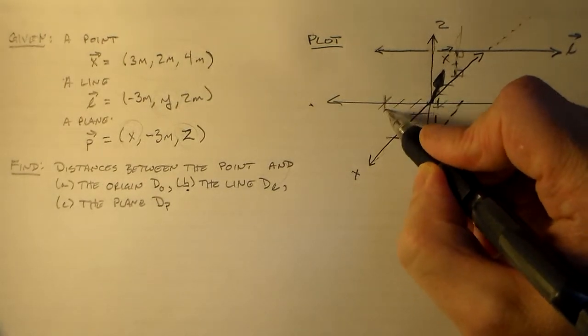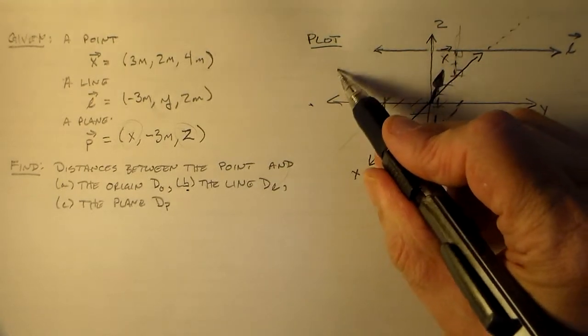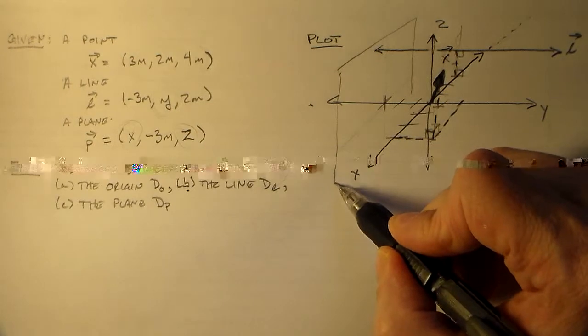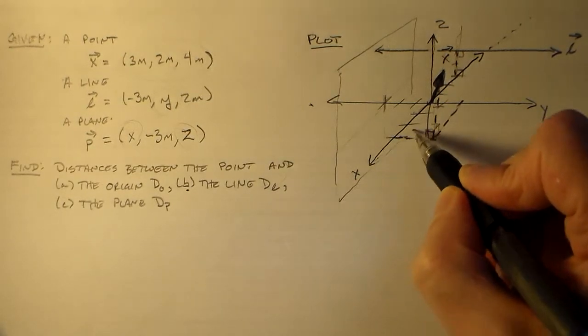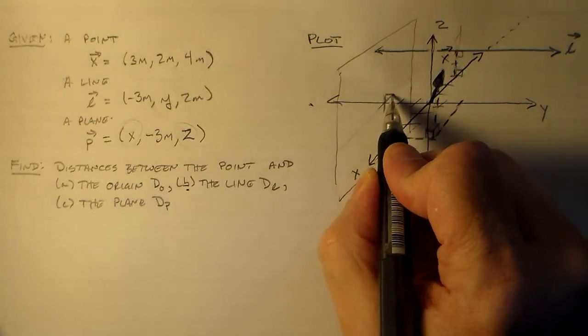So we have something perpendicular here, so it's coming out this way, coming out that way. And it looks plane-y, so it looks kind of like that, except it goes on forever. So it doesn't look like that at all. So that's our plane there, P.